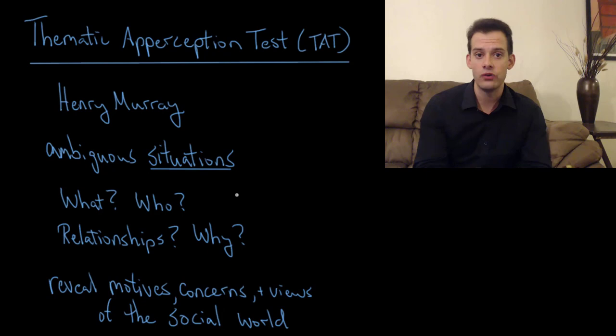And so the idea here is that by doing this over a number of scenarios this would reveal the person's motives, concerns, and views of the social world. So if they repeatedly saw certain concerns that the characters were having. This person is angry and that's his mother there and he's angry with her for this and you see a sort of theme maybe of anger throughout all of these relationships that would tell you something about the person's view of the world.